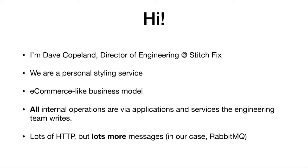I'm a director of engineering at Stitch Fix. We are a personal styling service for clothes. At the core of our company is an e-commerce business — we ship things we purchased at wholesale and sell them at retail. The difference is that our customers don't get to choose what they get; we choose for them. We have an algorithm that chooses clothes based on information customers give us, and then a human stylist looks at the algorithm's output and decides what they're going to get.